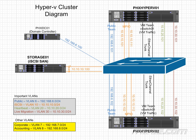With cluster-aware updating, we can run our Windows updates automatically. The virtual machines can automatically be migrated over to the other node in the cluster, Windows updates run, the host reboots and comes back up. Then the virtual machines are migrated from that node to the other one, which runs its Windows updates and reboots. Then the virtual machines can be rebalanced again — all of that can happen automatically.